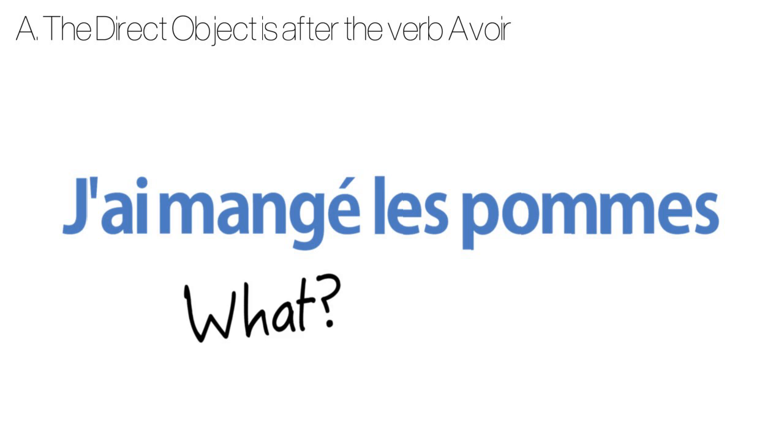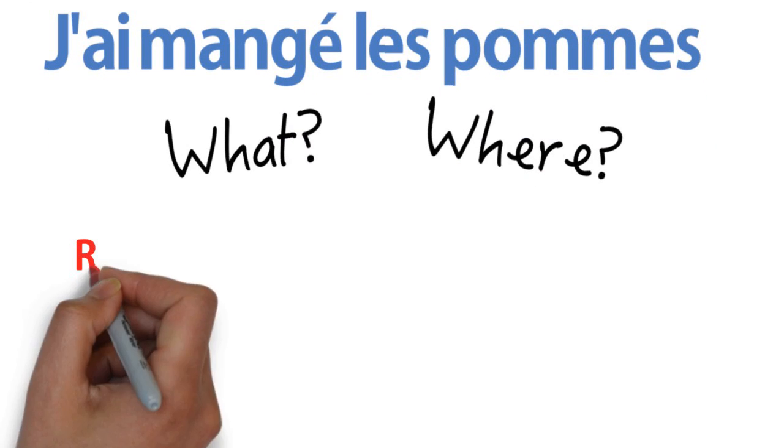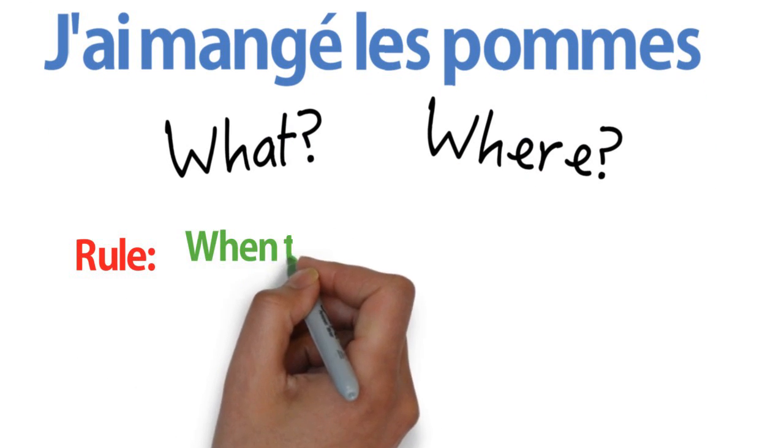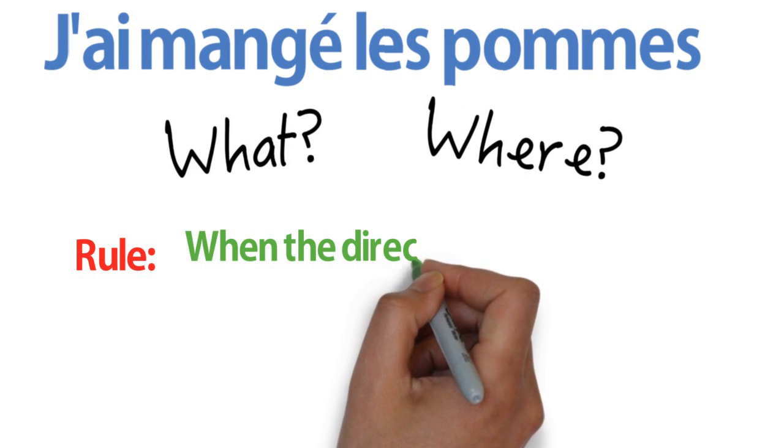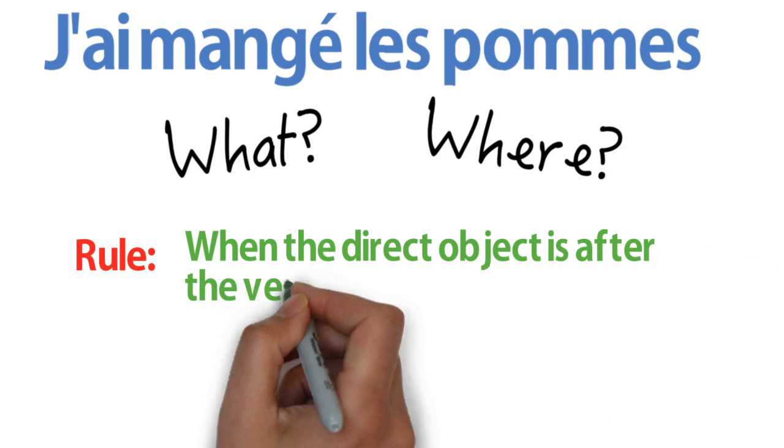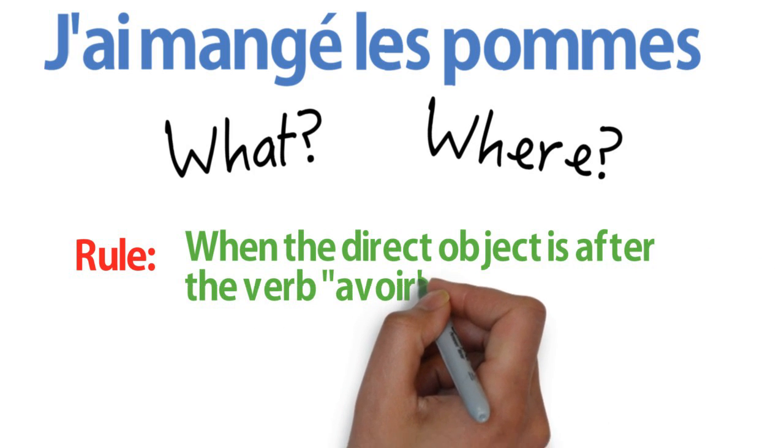So you know now your direct object, where it is. It is just after the verb. So we answer these two questions and the rule is, in this case, when the direct object is after the auxiliary verb avoir...